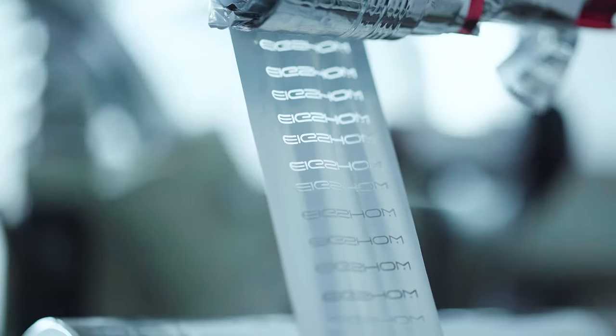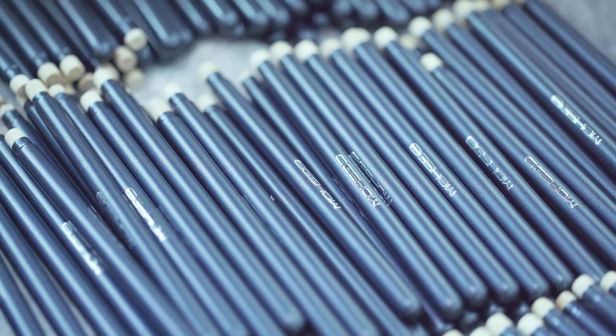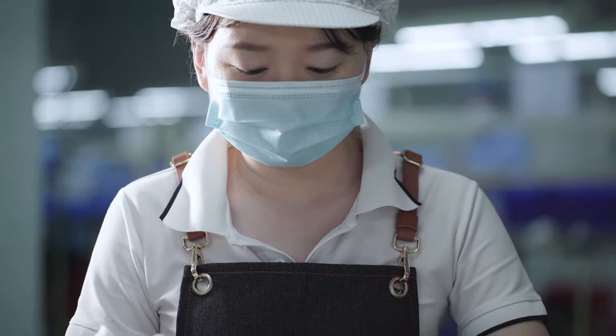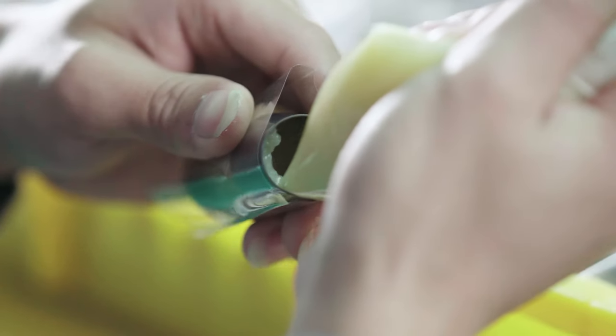The special shaping process is used to fix the brush head to ensure that the brush shape remains basically unchanged after the user uses the makeup brush and repeatedly cleans it.